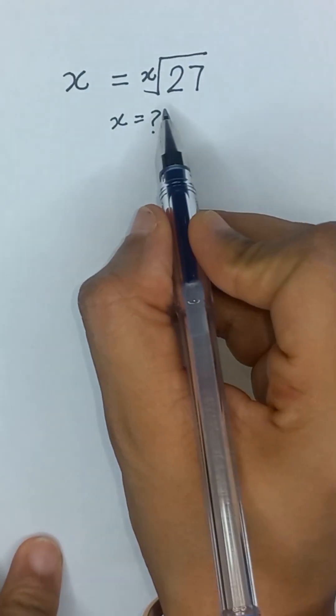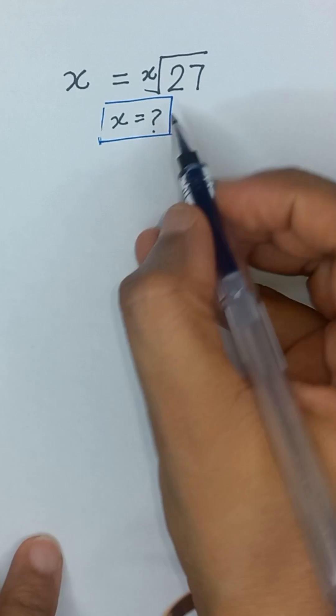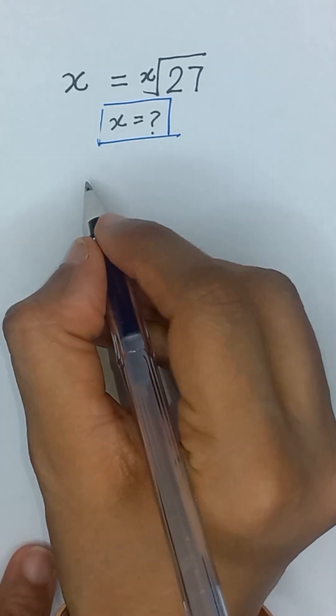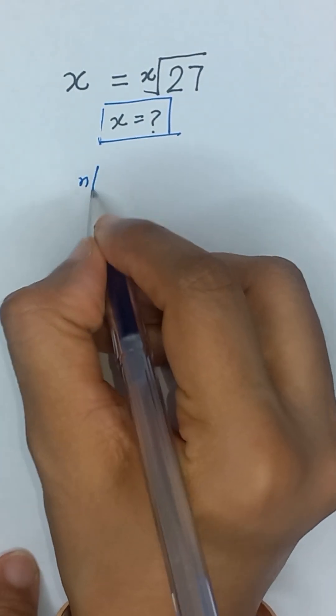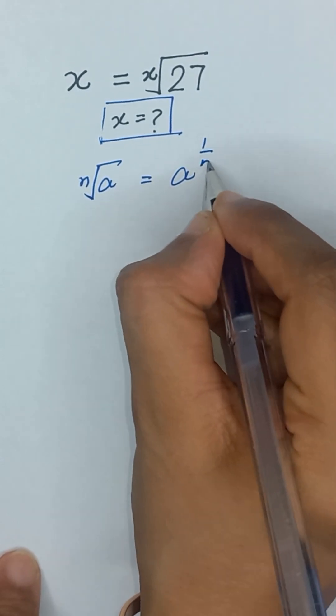x is equal to x root of 27 and we will solve for x. First of all, we know that nth root of a is equal to a to the power 1 divided by n.